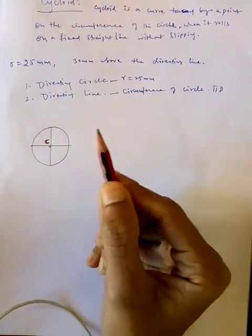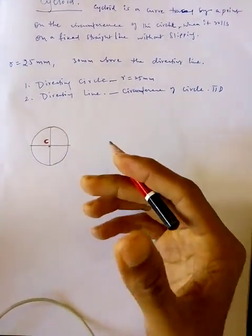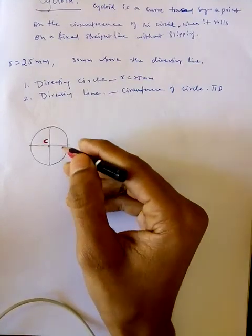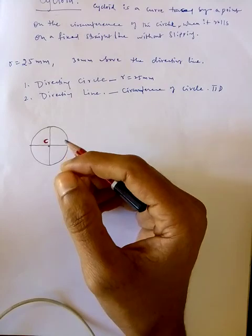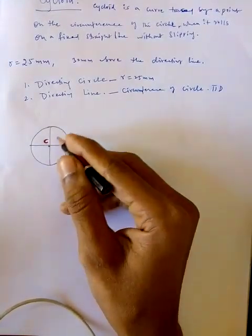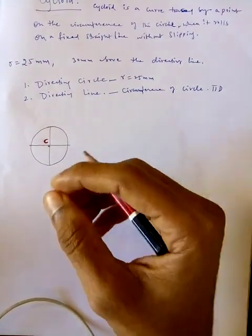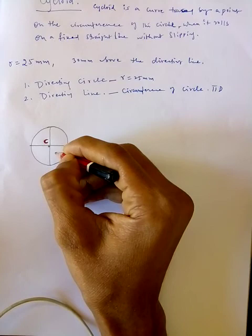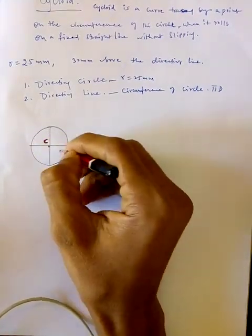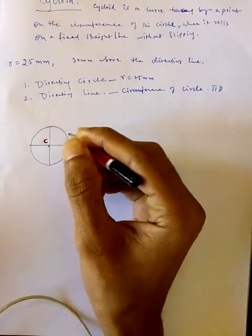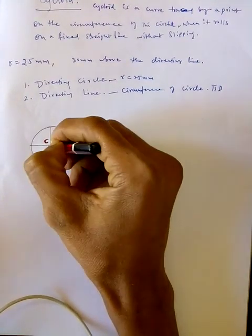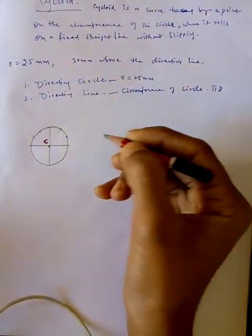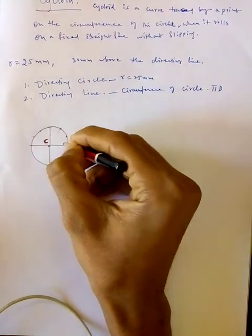Now divide this circle into 12 equal parts. You can use 4 or 8 parts, but 12 gives the smoothest curve. Draw horizontal and vertical lines first, then add lines at 30°, 60°, 120°, and 150° to get 12 equal divisions.